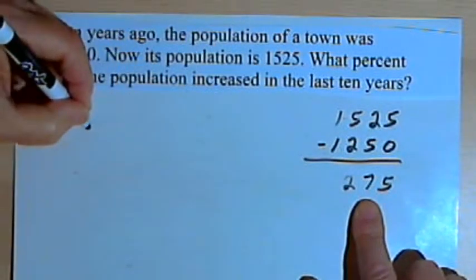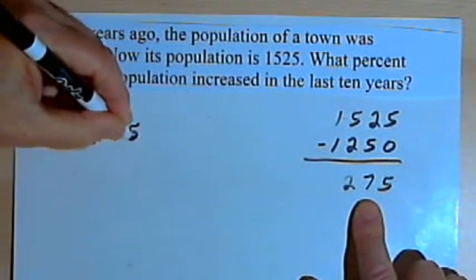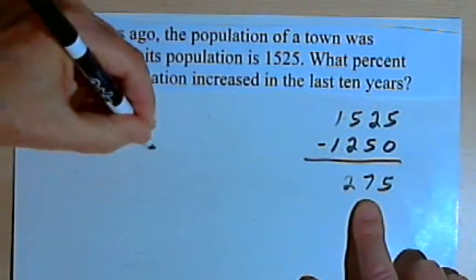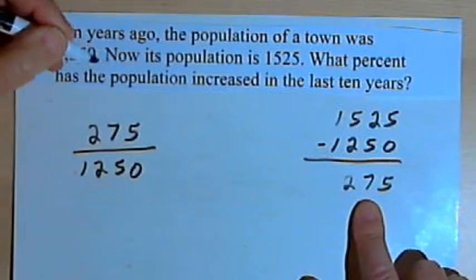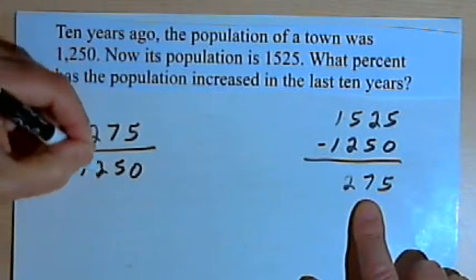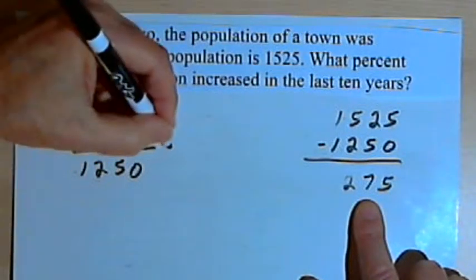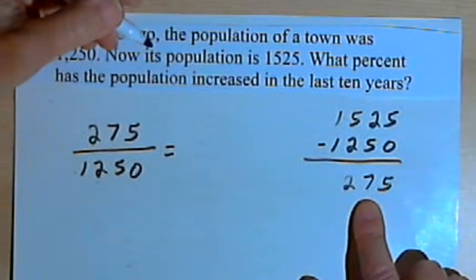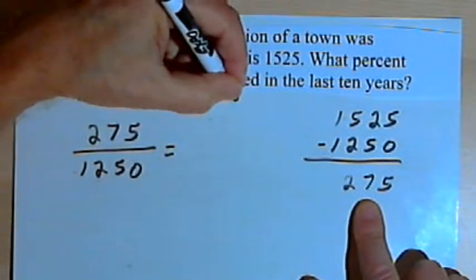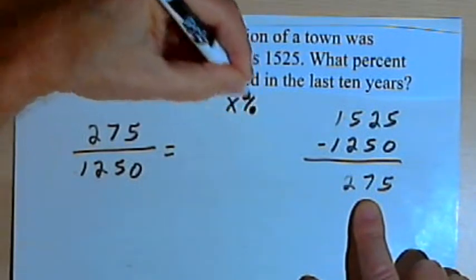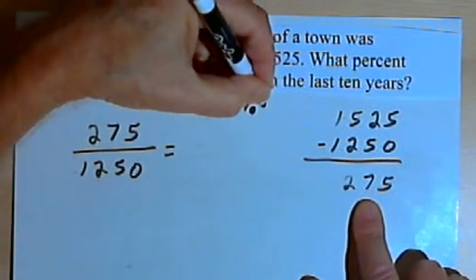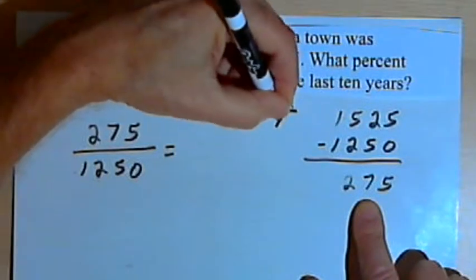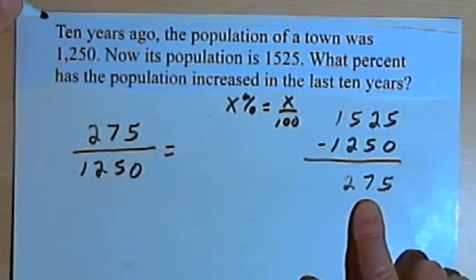So we can write 275, that's the amount it increased by, over 1,250. That's the amount it was. And set that fraction or ratio equal to what we're looking for, which is the percent. That's x percent. Now I'm going to write x percent as a fraction, which means it's just going to be x over 100.